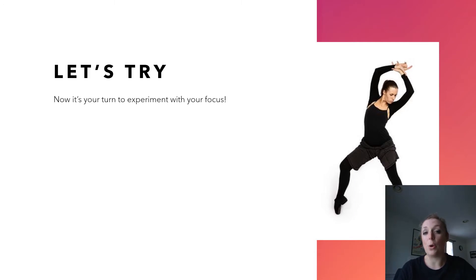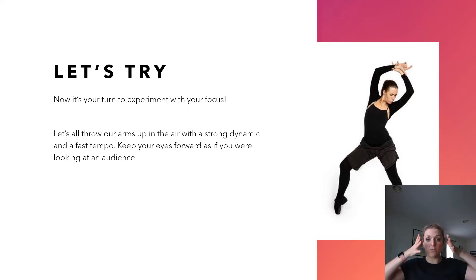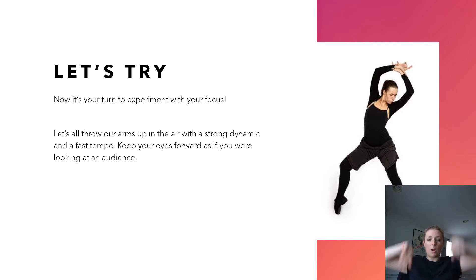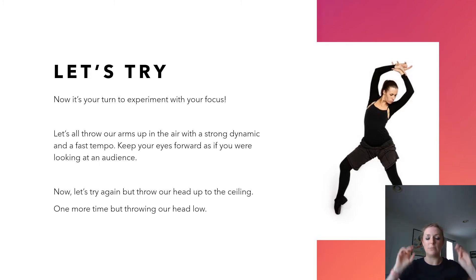It's time to experiment with your focus and where your eyes are looking. We're all going to throw our arms up in the air with a strong dynamic and a fast tempo. We'll keep our eyes forward as if we're looking at the audience. Ready? We're going to fling our arms up — one, two, three. Okay, so we were looking straight ahead and the arms were coming up. Now we're going to try it again — this time, throw your head up to look at the ceiling at the same time as the arms come up. One, two, three.